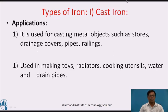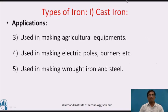Applications of cast iron: it is used for casting metal objects such as stoves, drainage covers, pipes, railings, etc. It is also used in making toys, radiators, cooking utensils, water and drain pipes. It is used in making agricultural equipment. Used in making electric poles, burners, etc. Also used in making wrought iron and steel.